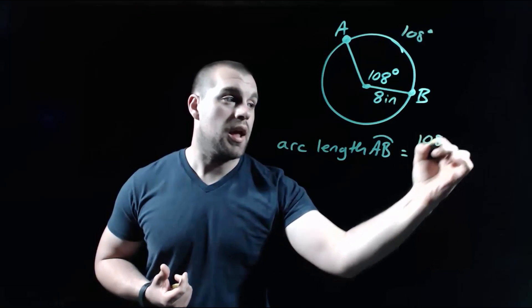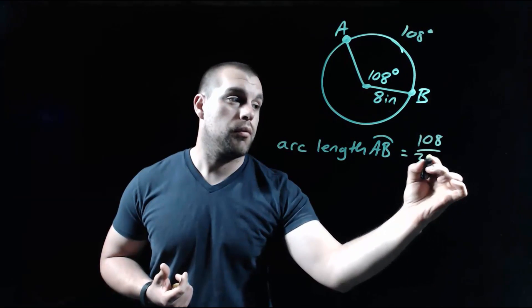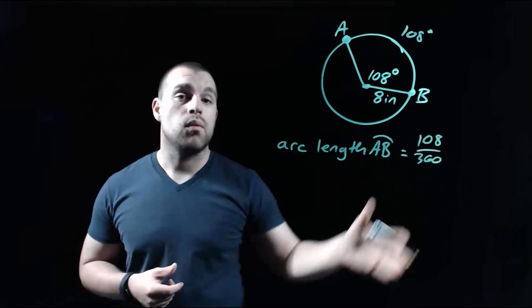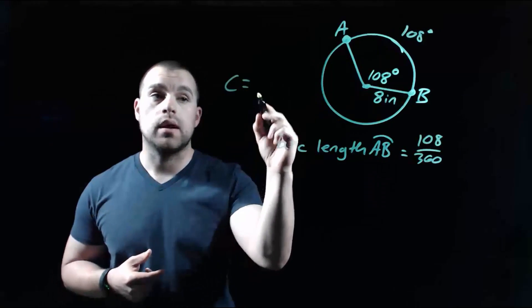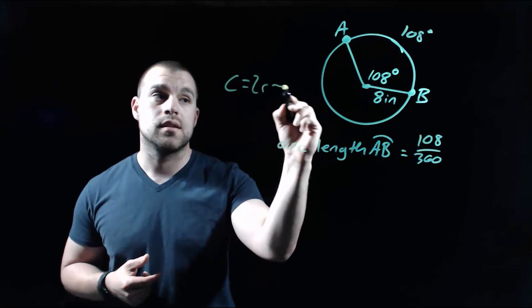So we go with our 108 degree angle over 360. But then on the end we need to know what the circumference of our circle is. And remember, in order to find the circumference, one thing we can do is 2 times the radius times pi.